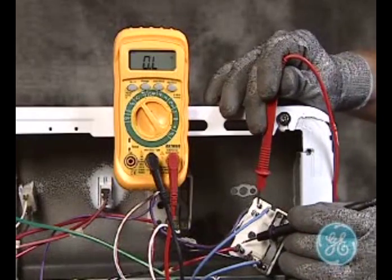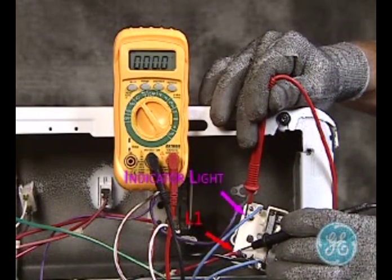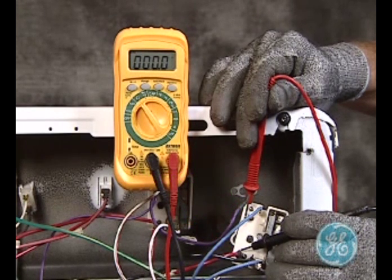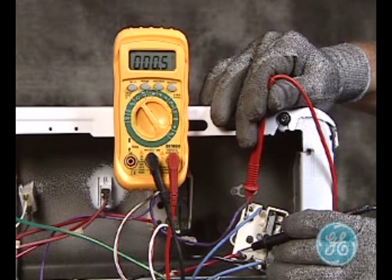Turn the switch to any on position and upon retesting the contacts, note that they are now closed and performing properly. An open reading at this point would indicate a bad switch and the light would not turn on with this particular surface unit switch.